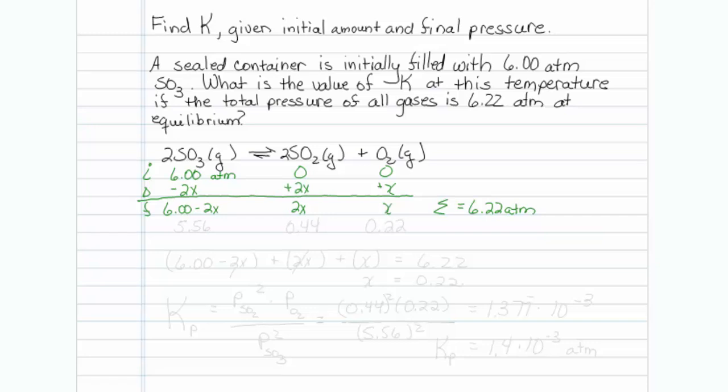What I know is that the sum of these three values is 6.22 atmospheres. So 6.00 minus 2x, that would be my first pressure, plus 2x, that's my second pressure, plus x, that's my oxygen pressure, is equal to 6.22.